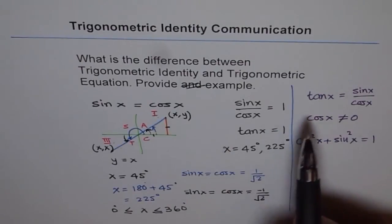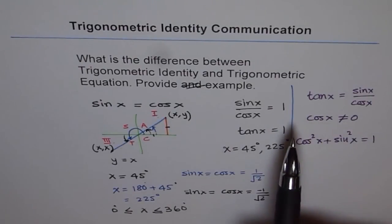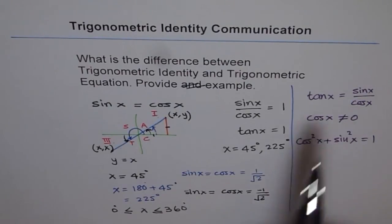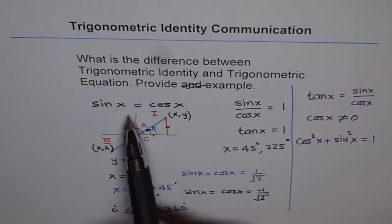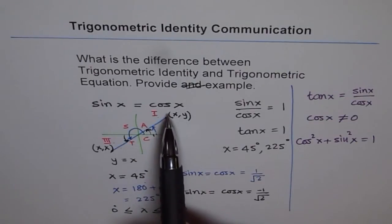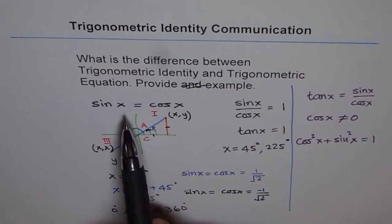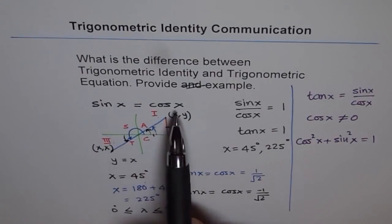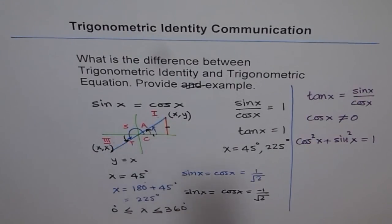So these two examples very clearly show what an identity is. Tan x equals sin x over cos x is an identity, but sin x equals cos x is just an equation — it is not an identity. To prove that an equation is not an identity, we can take even one point. If we take x equals 0 degrees, then sin of 0 is 0 but cos of 0 is 1 — it is not true. Therefore it is not an identity. That is how we can show that a given equation is not an identity.